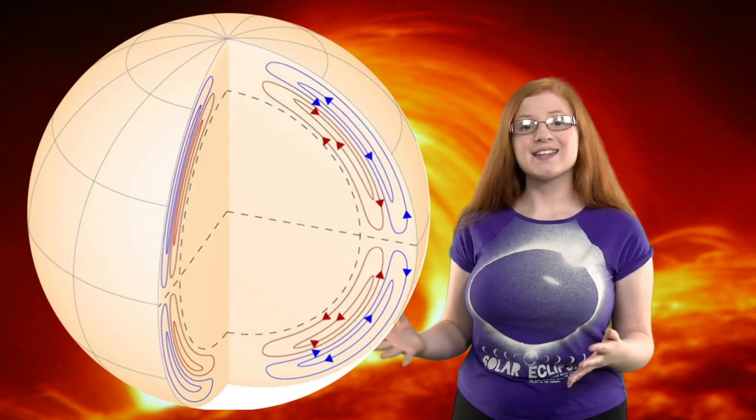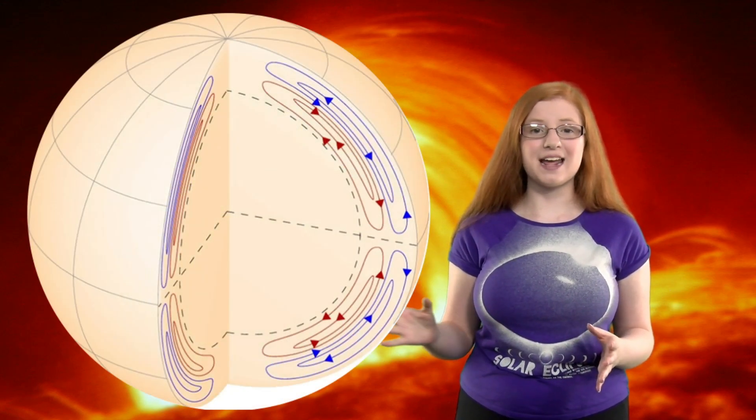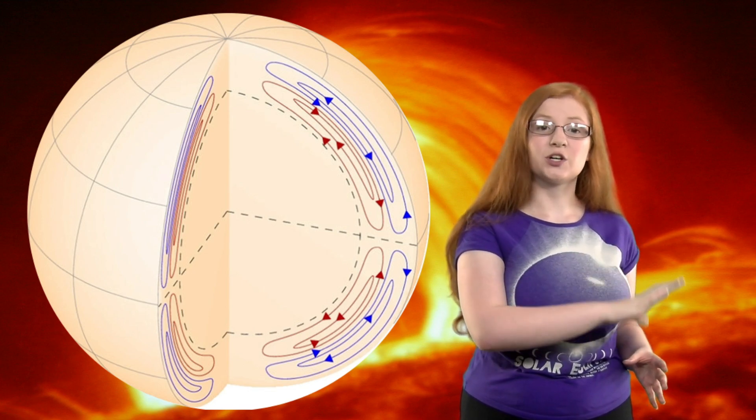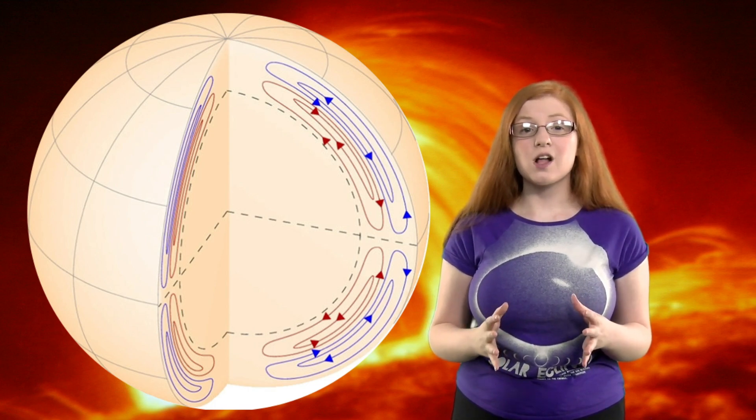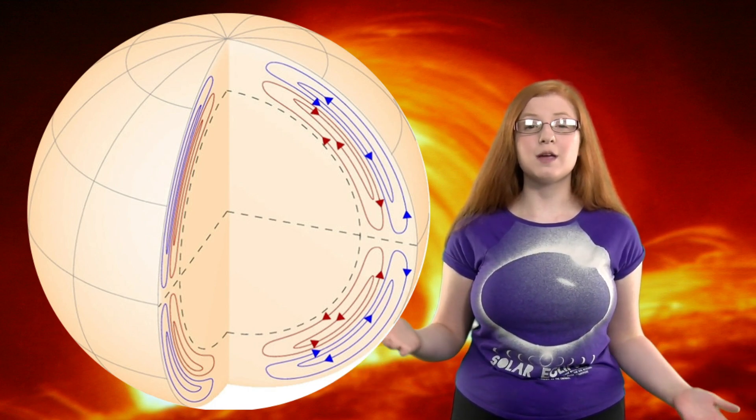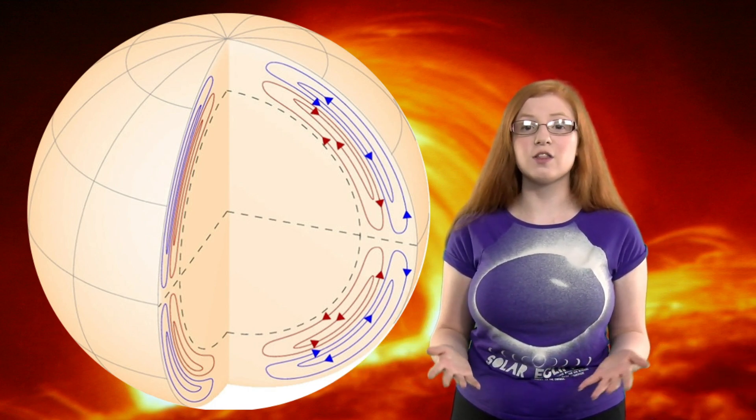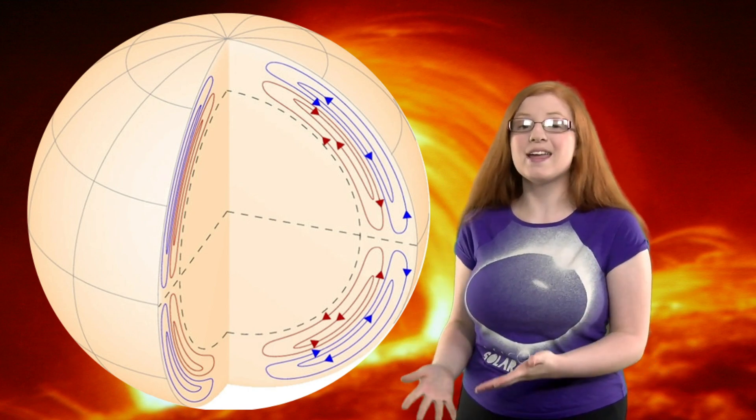The meridional flow acts like a conveyor belt carrying the magnetic field and that's why its turnover time is the same as the magnetic cycle. This is really important knowledge about the sun and hopefully will allow us to be able to better predict solar flares and other solar phenomena that could threaten our planet.